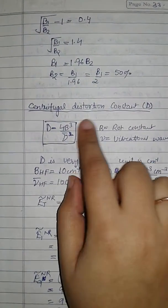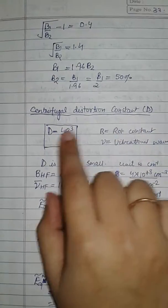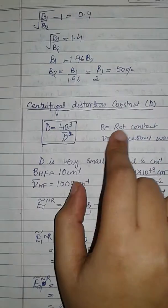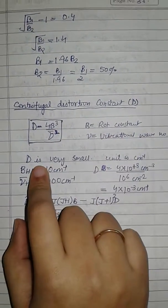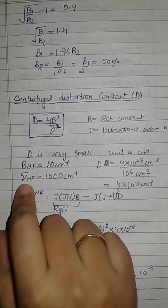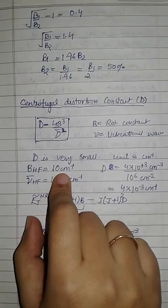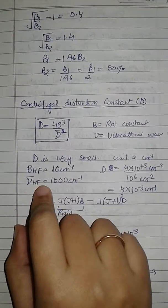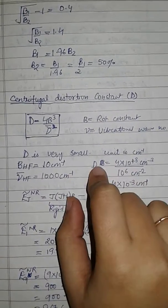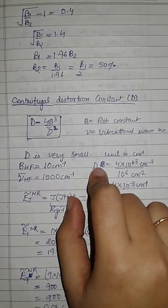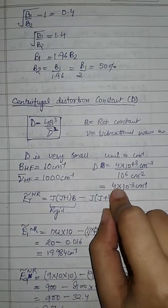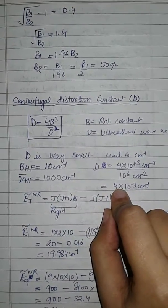For non-rigid rotation, there is a centrifugal distortion constant D given by D = 4B³/V², where B is the rotational constant and V is the vibrational wavenumber. D will come out to be very small and its unit is cm⁻¹. If the rotational constant of HF is 10 cm⁻¹ and the vibrational wavenumber is 1000 cm⁻¹, calculate the centrifugal distortion constant.